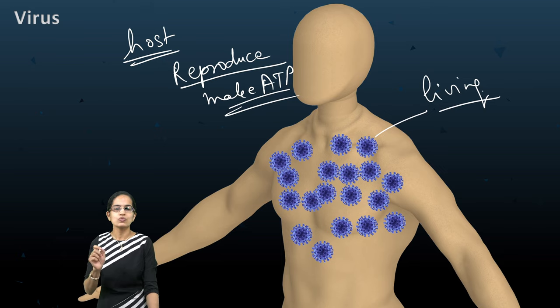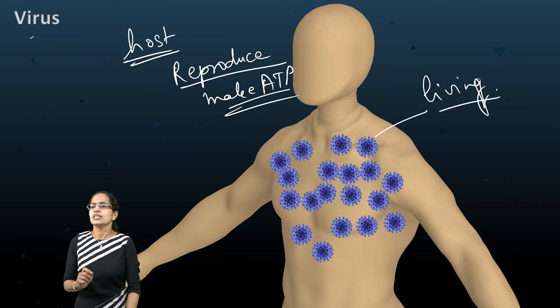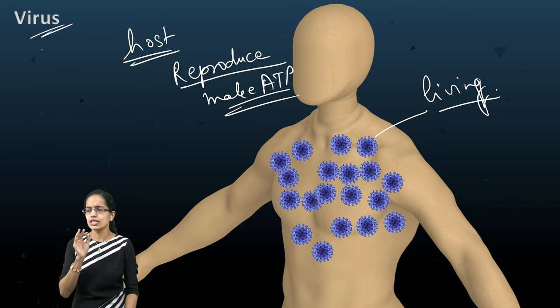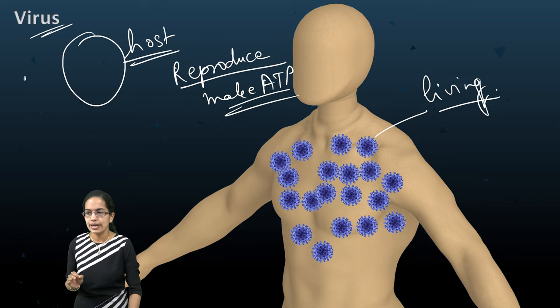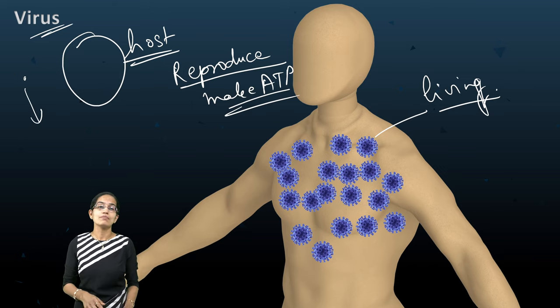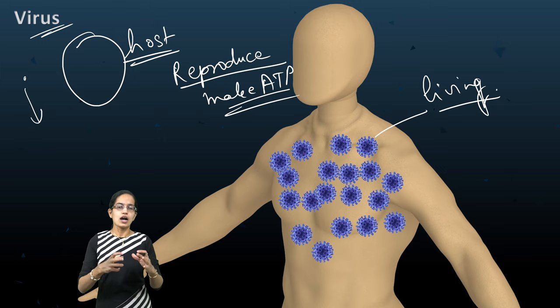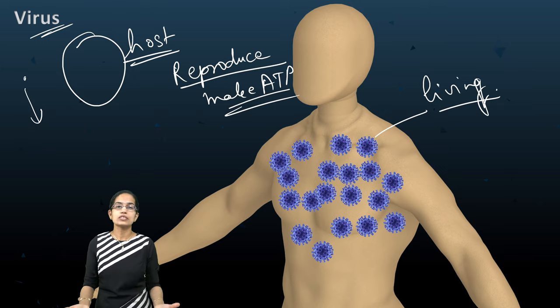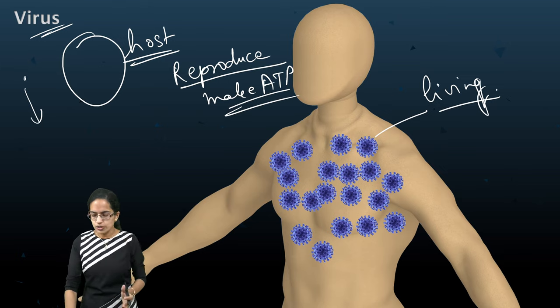Outside the host, they remain as non-living beings. As they get the host, they turn into living beings, and that is one of the most important and interesting characteristics of viruses. Now, viruses are very small in contrast to bacteria, which is comparatively much bigger. These viruses can be of various shapes. Coronavirus, for example, is a virus which is crown-shaped.